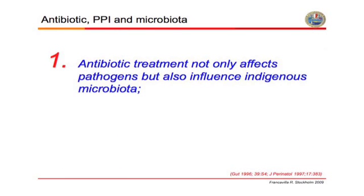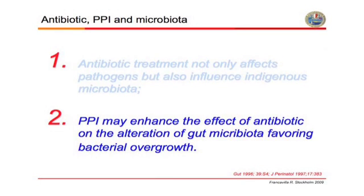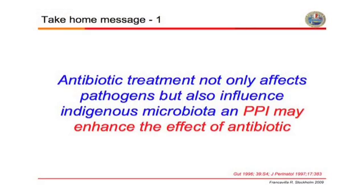Whenever we take antibiotics, this drug will not only affect the pathogens but also the normal enteric flora. When we use antibiotics in H. pylori treatment, we are also giving proton pump inhibitors, and this will enhance the effect of antibiotics in the gut because proton pump inhibitors favor bacterial overgrowth. So the first take-home message is that antibiotics not only affect pathogens but also influence our microbiota.